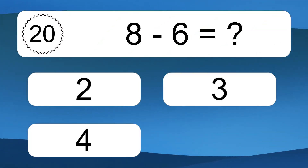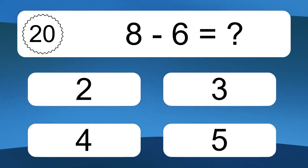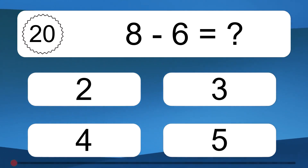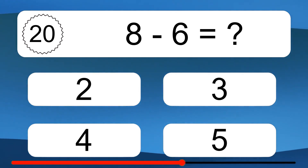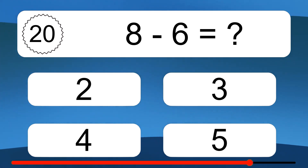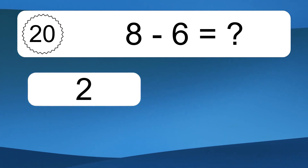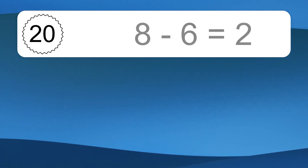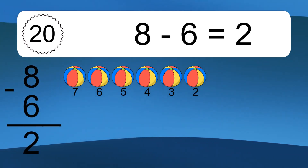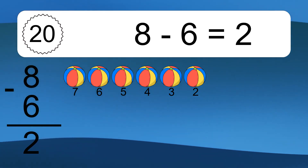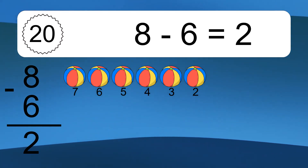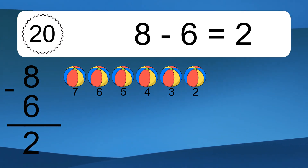8 minus 6 equals what? 8 minus 6 equals 2. Let's count it: 7, 6, 5, 4, 3, 2.